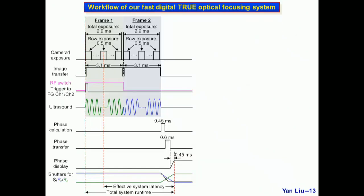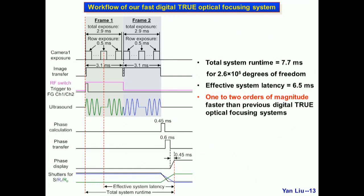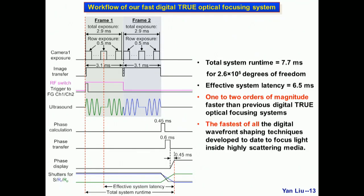Here is the workflow of our fast digital TRUE focusing system. We record two frames, each taking around three milliseconds, with the ultrasound phase shifted by π in the second frame. Our calculation takes less than half a millisecond, then we transfer and display the phase. The total system runtime is 7.7 milliseconds for 0.3 million degrees of freedom. Since we use a rolling shutter camera, we define an effective system latency — the time from the average camera exposure time to the playback of the wavefront — which is 6.5 milliseconds. Our system is one to two orders of magnitude faster than previous digital TRUE focusing systems, and is the fastest of all digital wavefront shaping techniques developed to date to focus light inside highly scattered media.